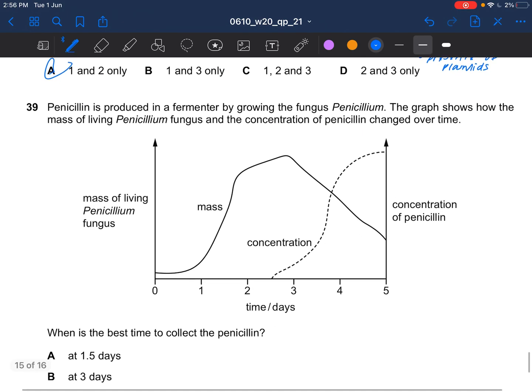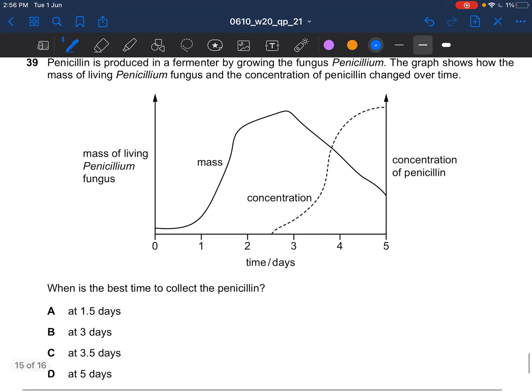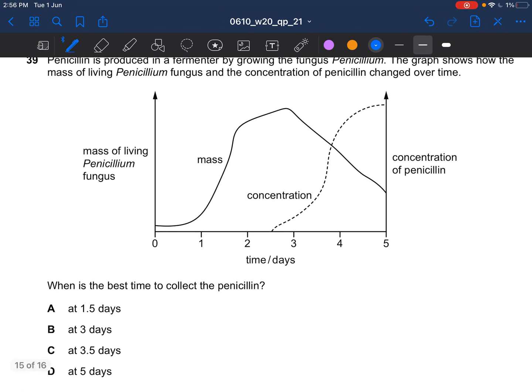Next question. Penicillin is produced in a fermenter by growing the fungus penicillium. The graph shows how the mass of living penicillium fungus and the concentration of penicillin changed over time. When is the best time to collect the penicillin? It would be when the concentration of penicillin is the highest which is at day 5.